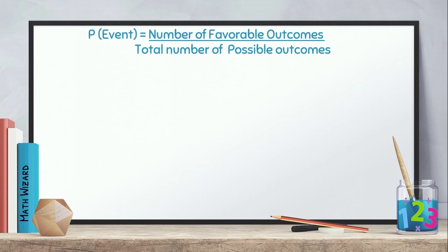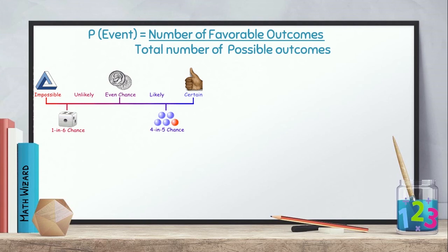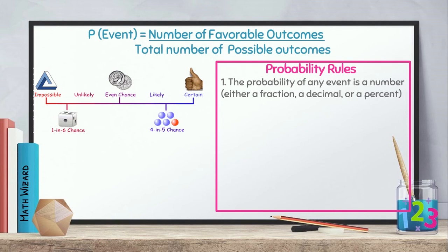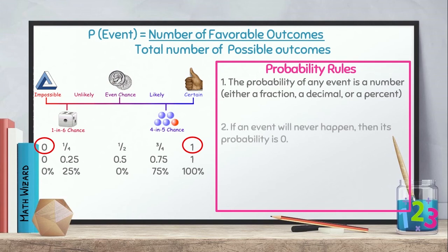Let me show you the probability line and the probability rules. The first one is, the probability of any event is a number. It's either a fraction, a decimal, or a percent. It is between 0 to 1. The next one, if an event will never happen, then its probability is 0.